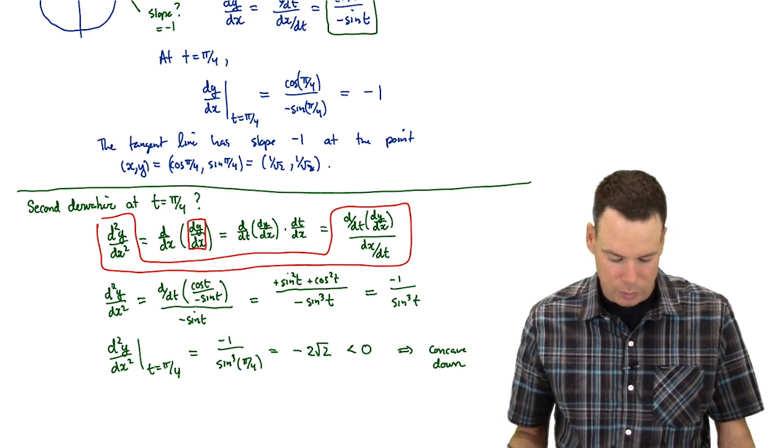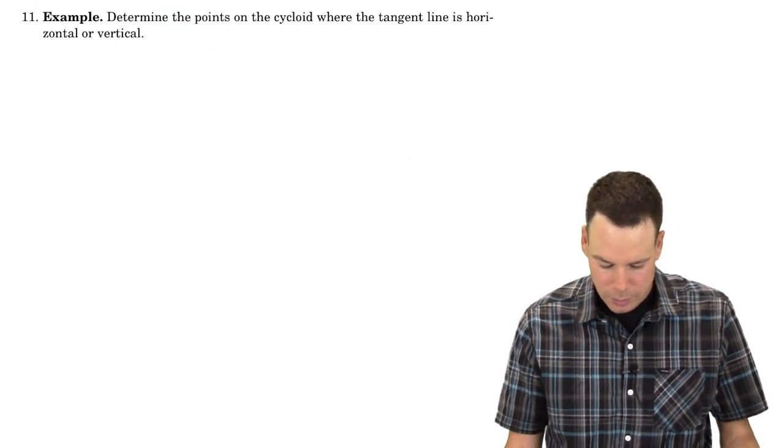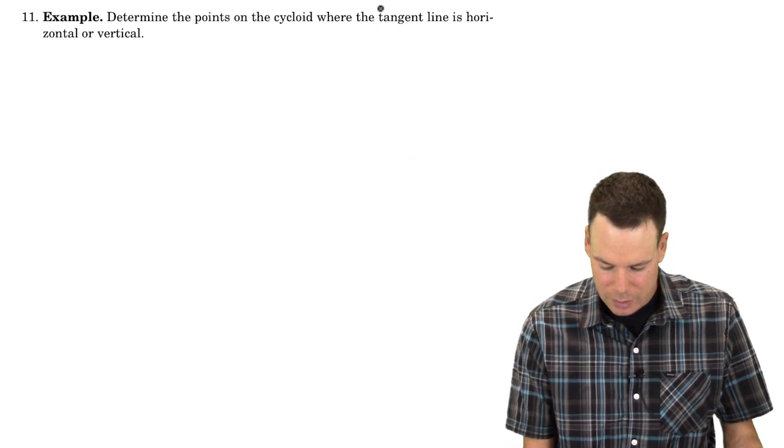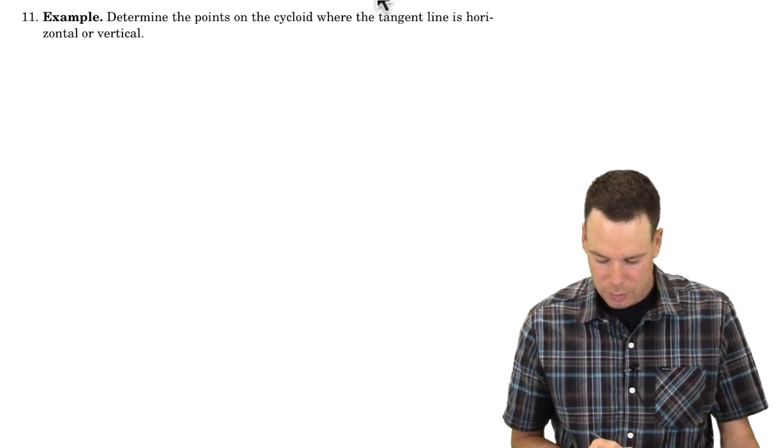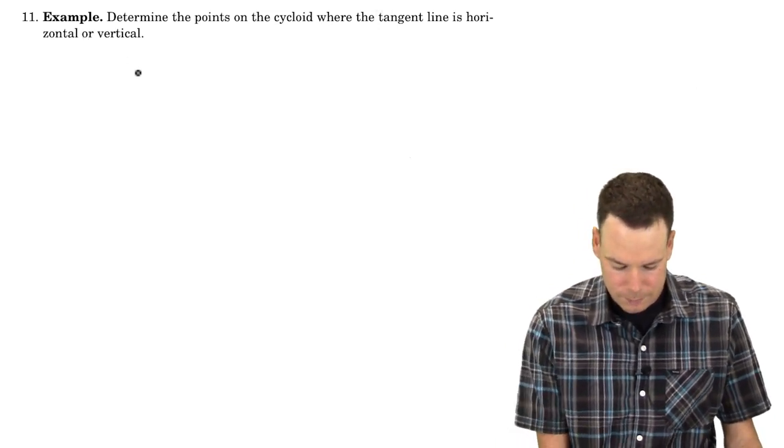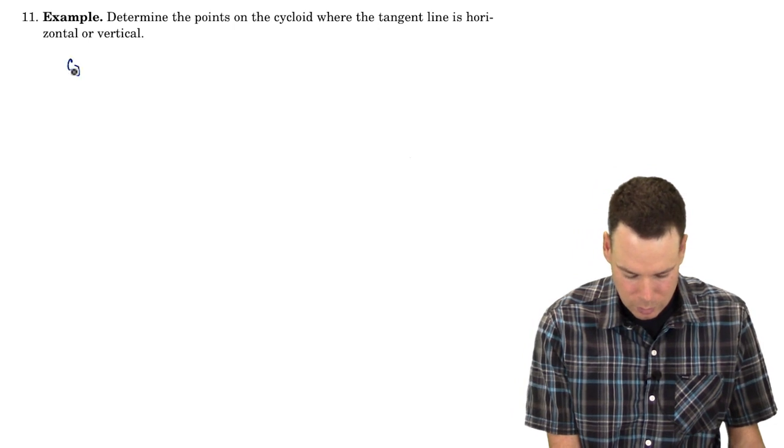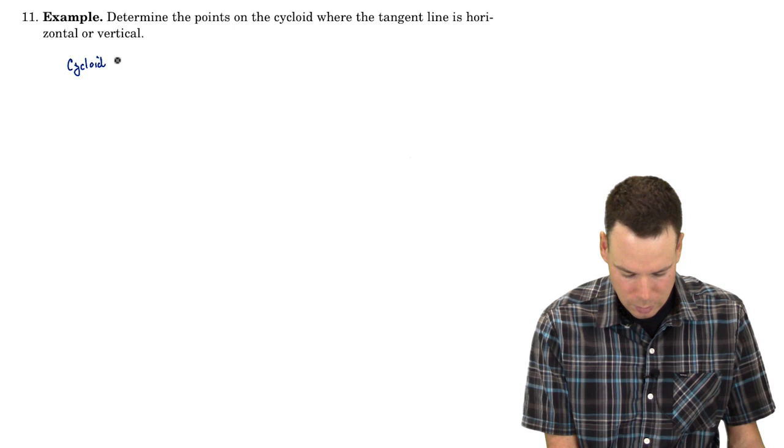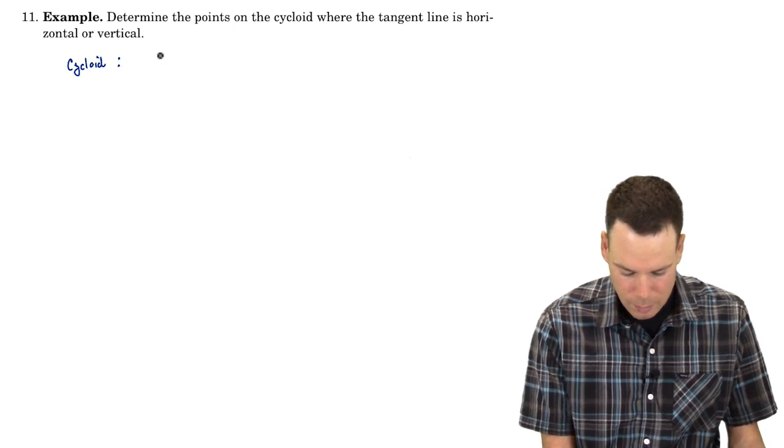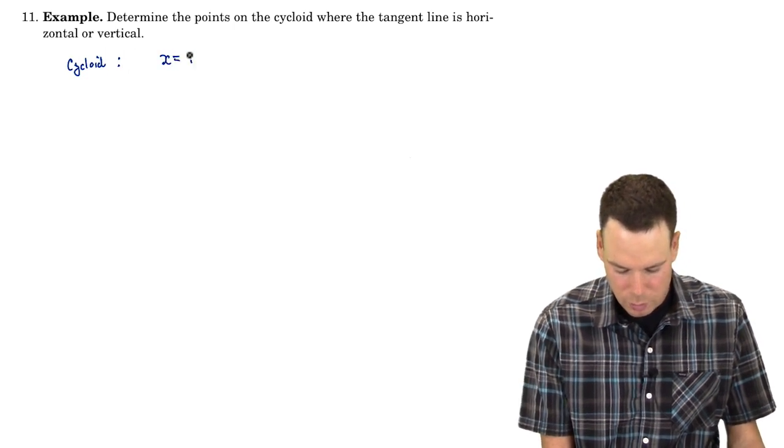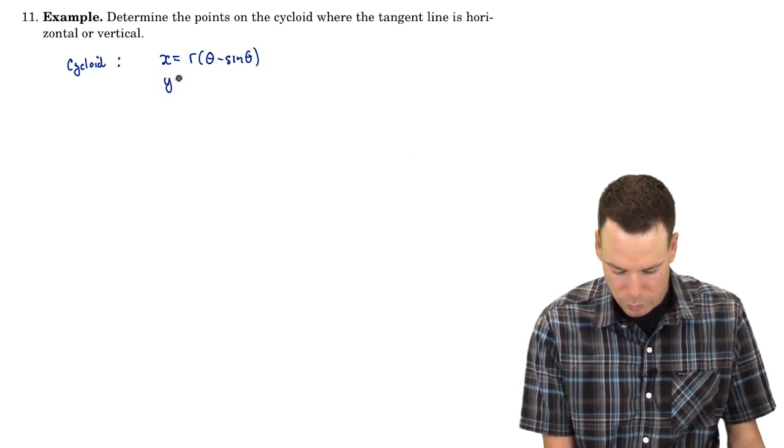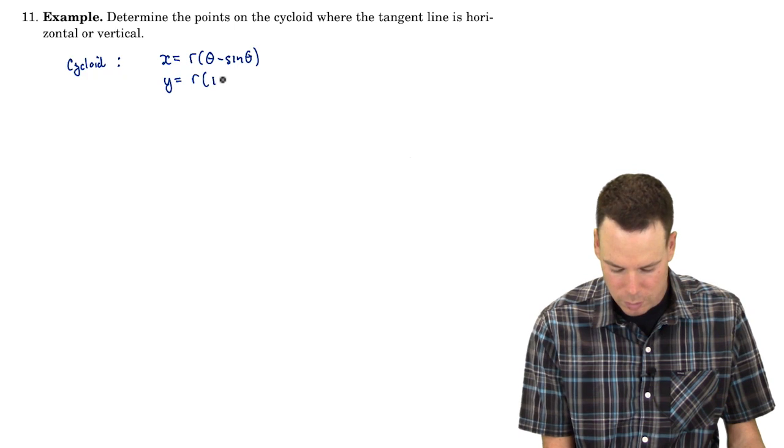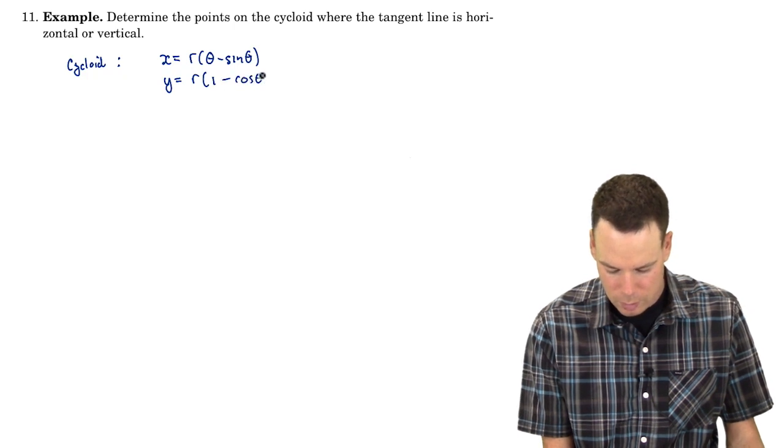Alright, let's look at one last example. Determine the points on the cycloid where the tangent line is horizontal or vertical. So what was our cycloid? Our parametrization for our cycloid was x equals r times theta minus sine theta and y was equal to r of 1 minus cos theta.